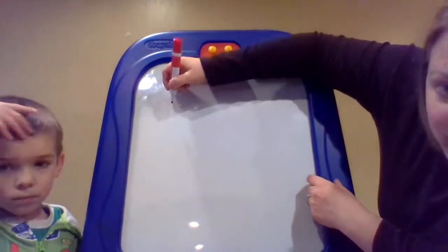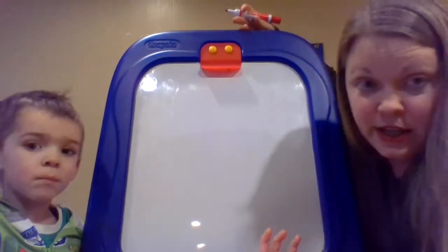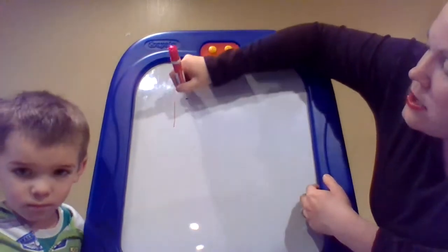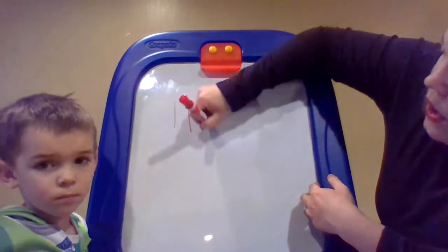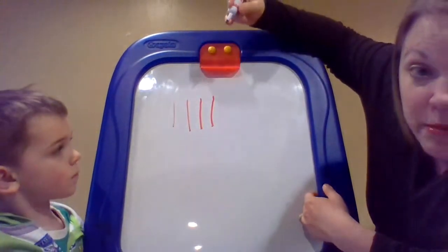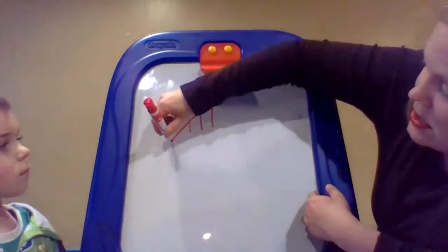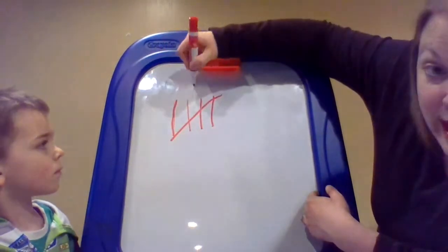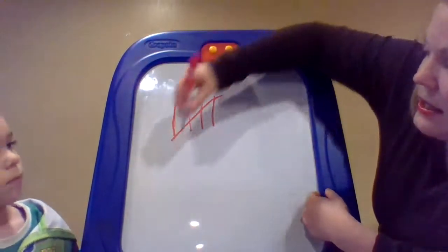Ready? Tally marks are lines — they just represent a number. So one, two, three, four. Number five shuts the door. So when you have the fifth tally mark, it goes across like that.